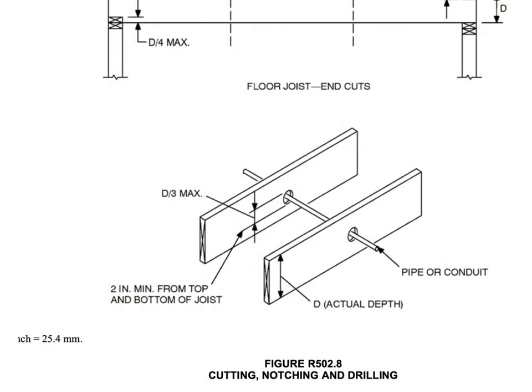Drilling holes is something else the code provides for. The diameter of the hole can be up to one-third the depth of the joist, anywhere along its length including the middle third. However, it can't be so large that it's closer than two inches to the top or bottom edge — because those edges are where we want tension and compression to remain continuous.